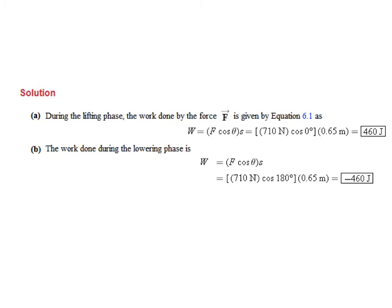And when the weightlifter was lowering the weights, they were still applying a force of 710 newtons through a distance of 0.65 meters, but now the angle between the force and the displacement was 180 degrees, and the cosine of 180 degrees is negative 1. So now our work is negative 460 joules.